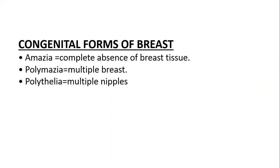Congenitally, breast could be of three types. Congenital means a condition that is present by birth. There could be amazia — that is absence of breast tissue — polymastia, which is multiple breast tissue, or polythelia, that is multiple nipples.